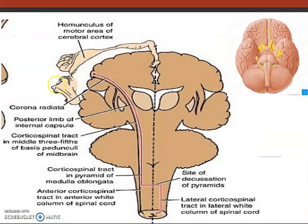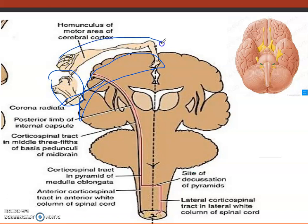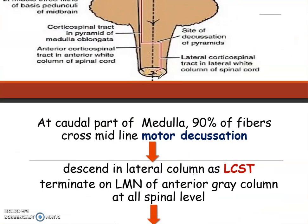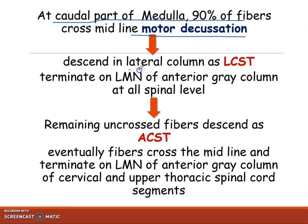This is the homunculus. There is the corona radiata present here. These are the areas of the cerebral cortex controlling the sensory area. The motor area of the mouth and the motor area of the limbs are shown here. At the lower part of the medulla, motor decussation occurs, as described before, and they descend in the lateral column as the lateral corticospinal tract, terminating on lower motor neurons of the anterior horn at each spinal level.